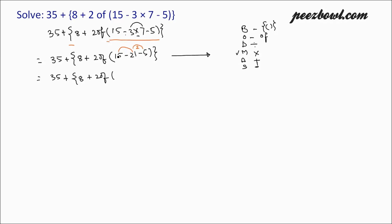Let us do it. We have 15 minus 21, that is minus 6, then minus 5, closing both the brackets.